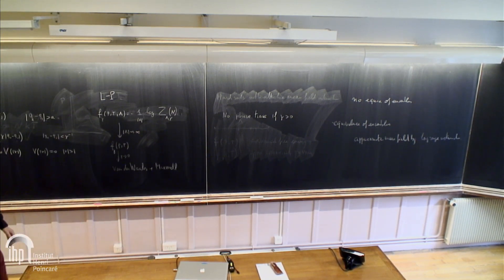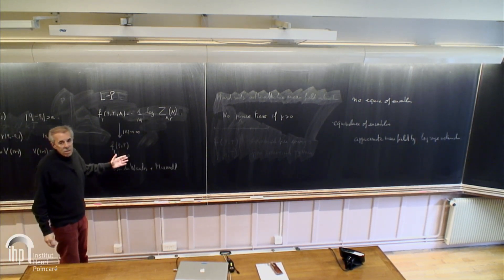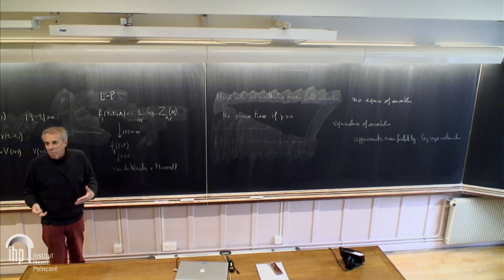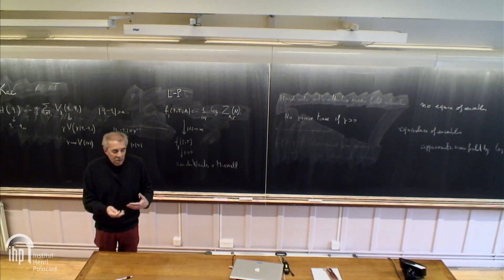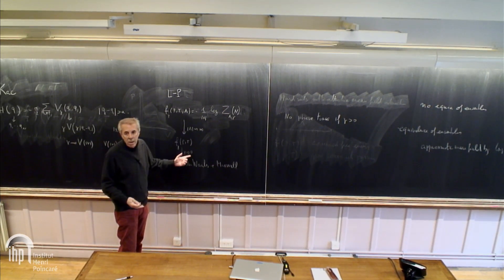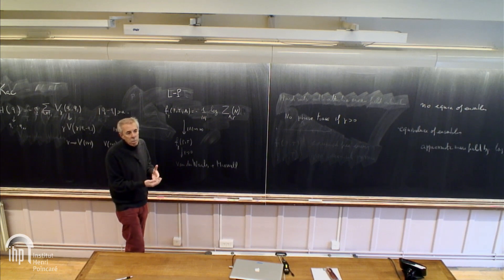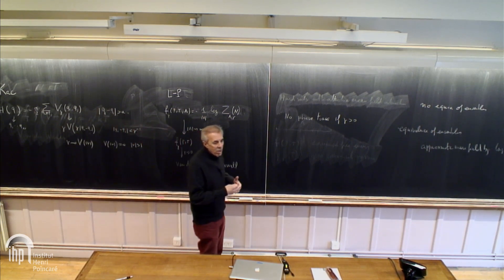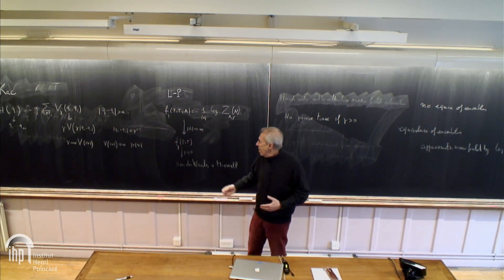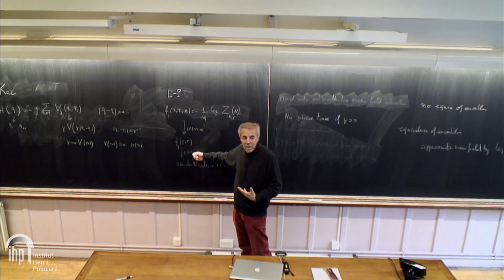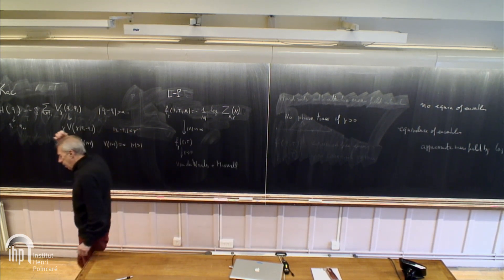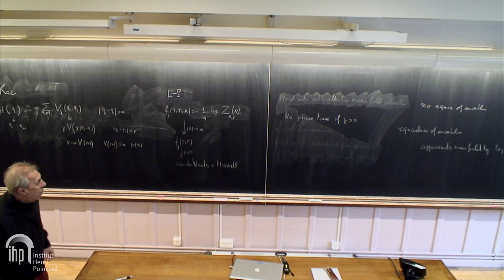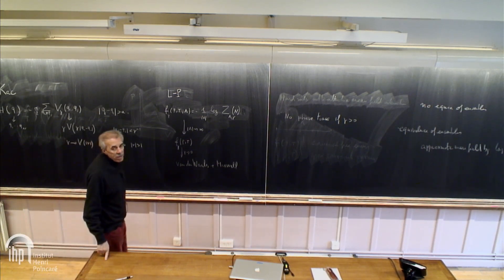In the limit gamma to zero, I don't have a statistical mechanics system — the interactions are only well defined when gamma is positive. So when gamma is positive, there is no phase transition. In the limit I get a phase transition, but no statistical mechanics system with gamma positive has it. How could one try to fix this?